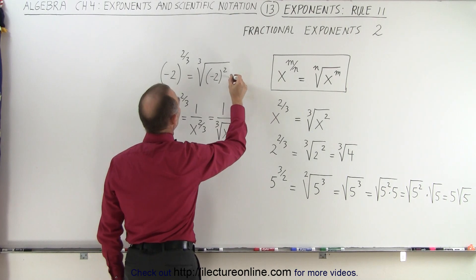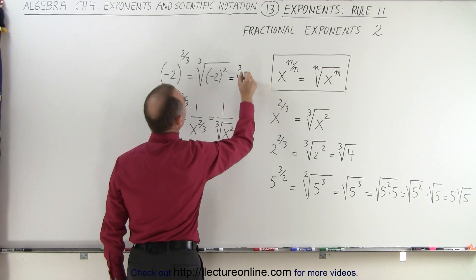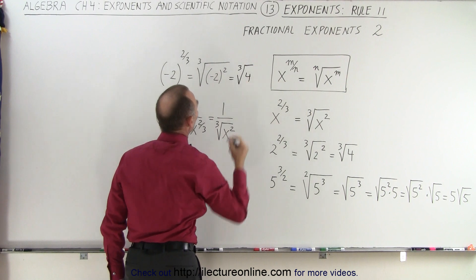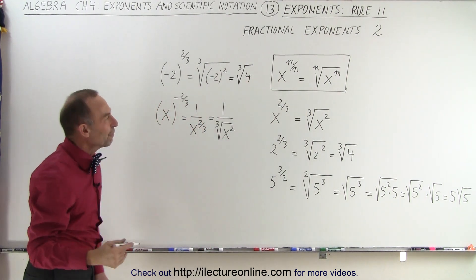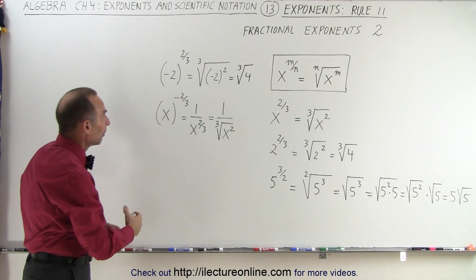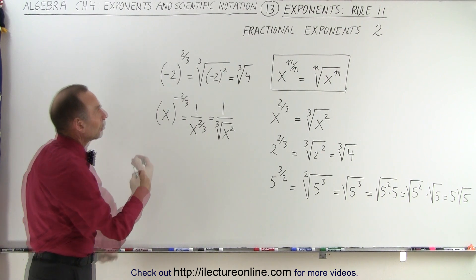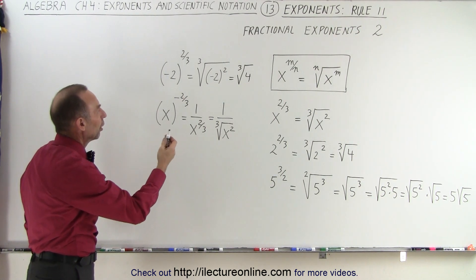This can then be written as the cube root of negative 2 squared, which would be 4. Notice we do lose the information that there was a negative 2 there, but the result is the same thing. The result would be the cube root of 4.